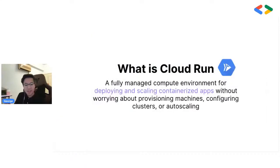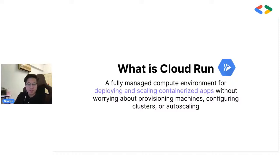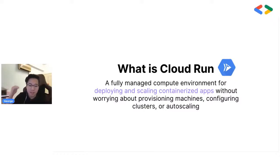Let's get right into what Cloud Run is. It is a fully managed compute environment for deploying and scaling containerized workloads, without worrying about the provisioning of machines, configuring clusters, or other scaling concerns. To put it simply, Cloud Run is something that helps you run your container without worrying about the infrastructure side of things — like provisioning machines, configuring clusters, and autoscaling. It makes your workflow much easier in terms of deploying and scaling your apps.